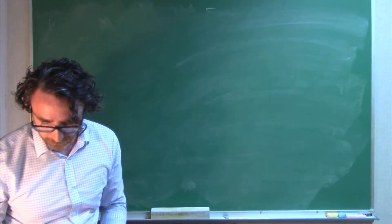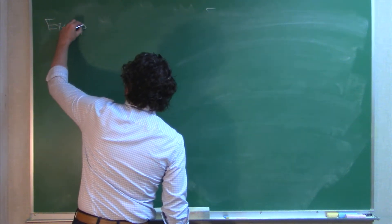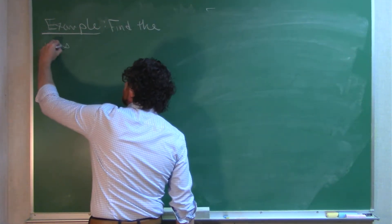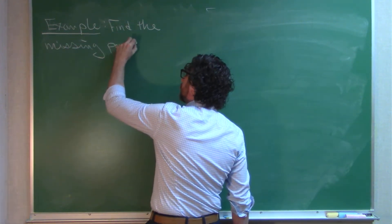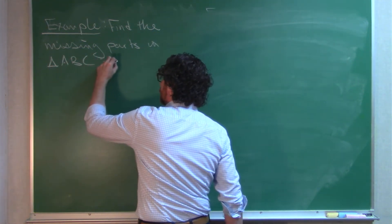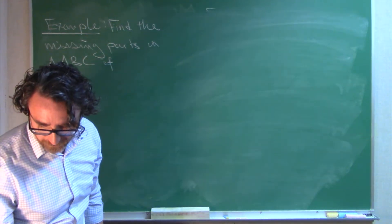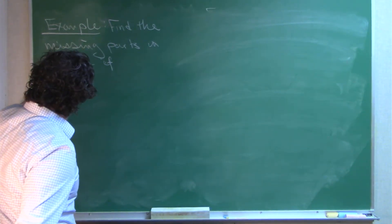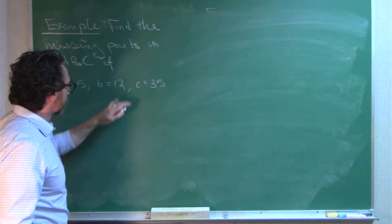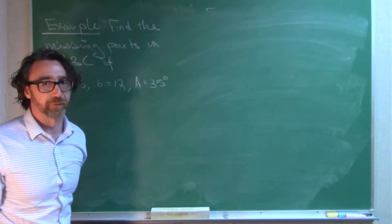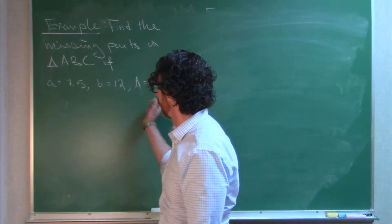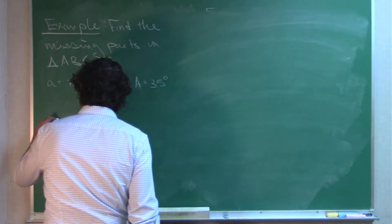Okay, so once again, pulling one from the book. Find the missing parts in triangle A, B, C. If A is 7.5, B equals 12, and angle A equals 35 degrees. Okay, so once again, we are given two side lengths and one angle. And notice there's quite a bit of similarity to the example we just did. Okay, so once again, law of sines.